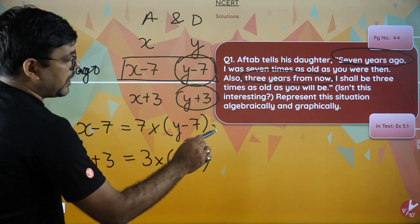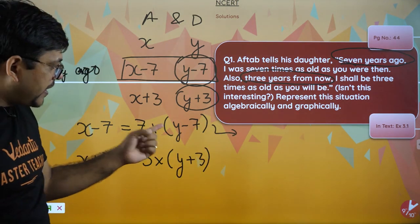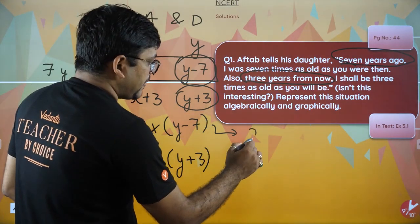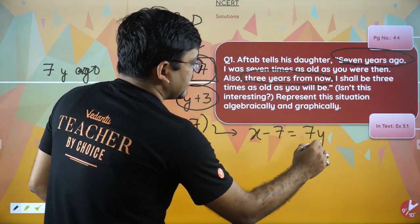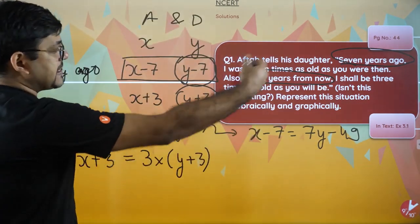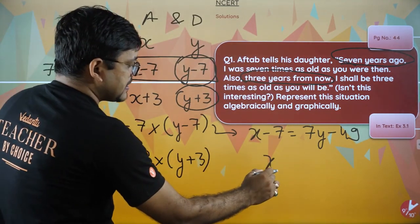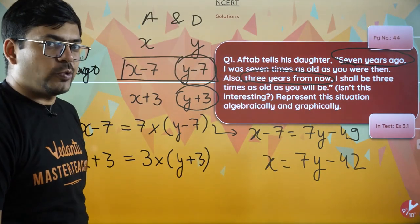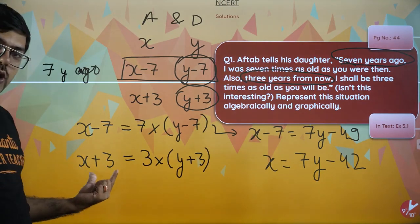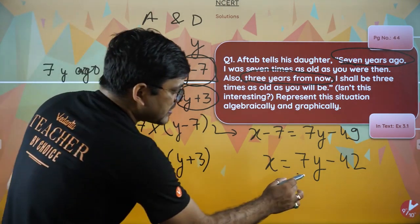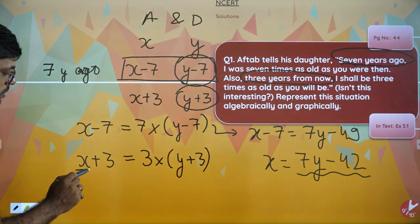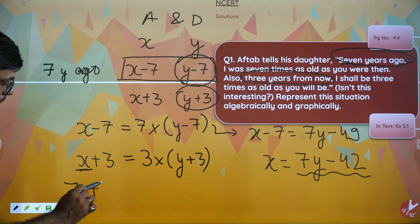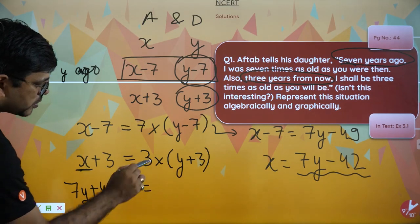पहले equation से solve करना चाहो तो देखो — 7 into Y = 7Y और 7 into minus 7 = minus 49। तो यहाँ पे आएगा X minus 7 equals 7Y minus 49। इसको solve करो, minus 7 को उधर भेज दो तो X की value आ जाएगी। वो value 7Y minus 42 होगी। उसे second equation में डाल दो।